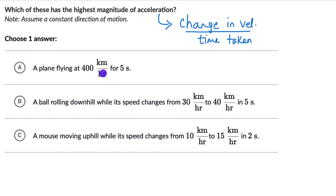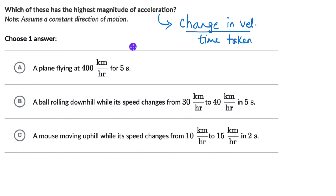For the first option, a plane flying at 400 kilometers per hour for five seconds — we aren't really seeing any change in velocity. The plane is moving with one constant velocity, 400 kilometers per hour. So there is no change in velocity, meaning no acceleration. So this option is wrong.